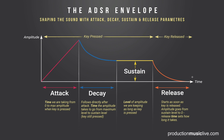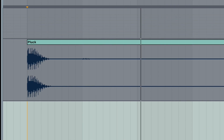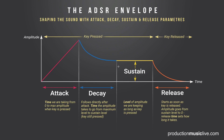If you want short and plucky sounds, what you do is take attack time to zero, so you start right away with your maximum amplitude — for example, like a kick sound. Maximum amplitude right at the start, and then short decay time, meaning you just go tuk, tuk, and then the sound stops. Such plucky sounds mostly don't have a high sustain level and they're very short or even zero in the release time.